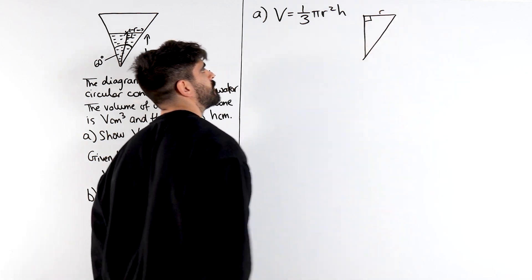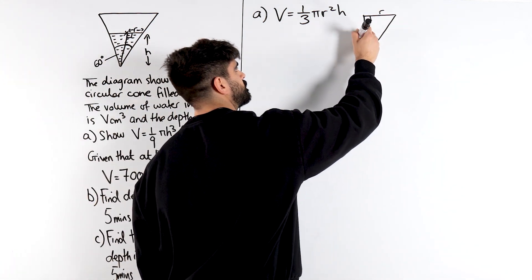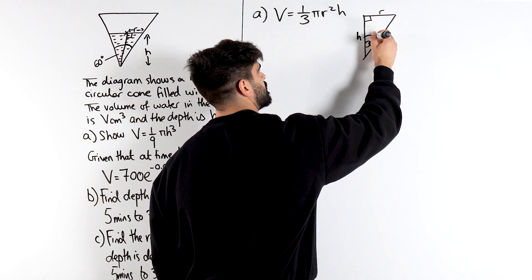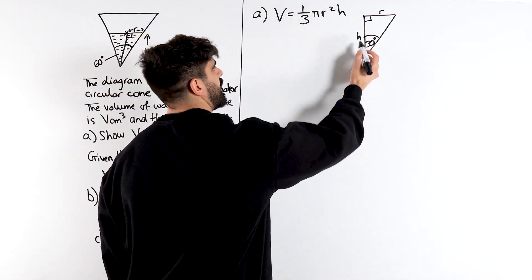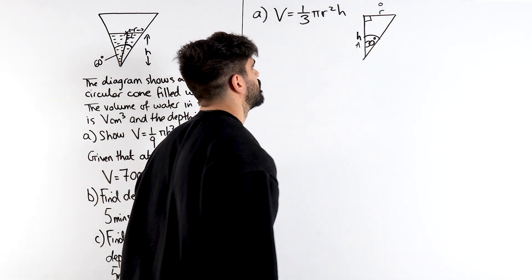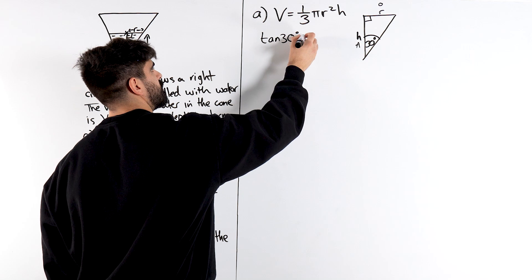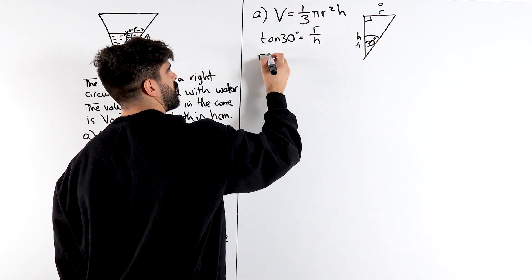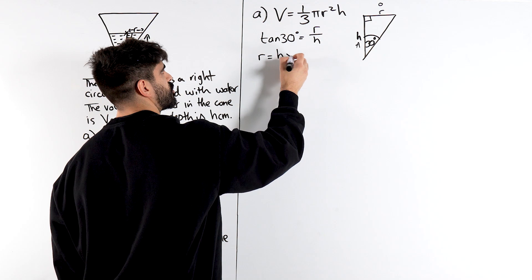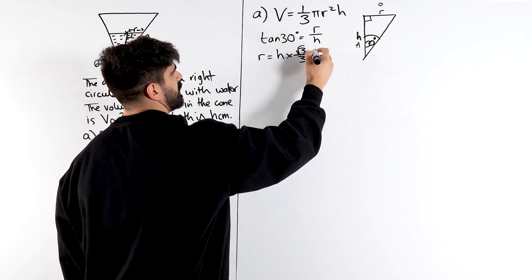So we draw that over here. So, we have the radius, we have the height of the triangle, and we have 30 degrees. Now, we just need to form a relationship between them. h is the adjacent, and this is the opposite. So, it's going to be tan. Tan of 30 degrees is the opposite r divided by the adjacent h. So, r, we times through by h, is h lots of tan 30, which is root 3 over 3.